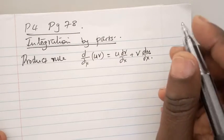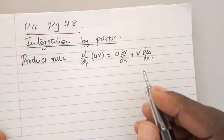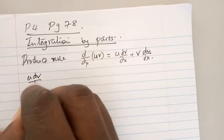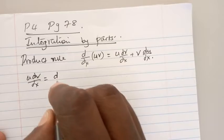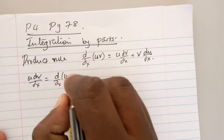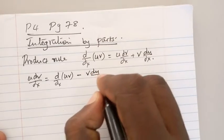We can easily make any of this the subject of the formula. If you want to make u dv/dx the subject, it equals d/dx(uv) minus v du/dx.